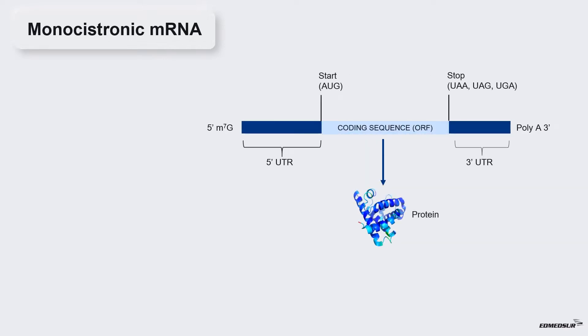Monocistronic mRNA. Before discussing viral genome expression, it is important to understand the difference between monocistronic and polycistronic mRNAs. Monocistronic mRNA encodes only one protein. It is found in all eukaryotic mRNAs.